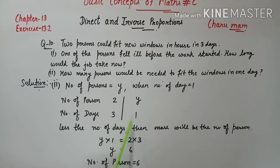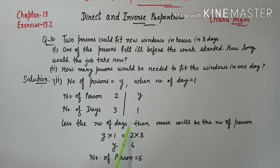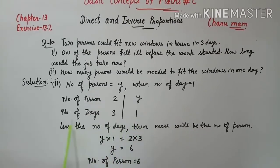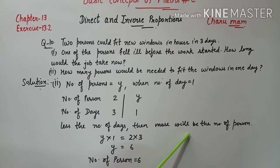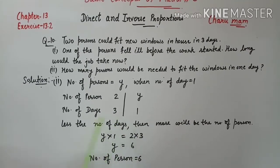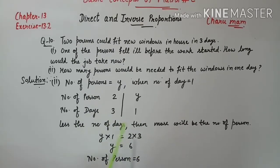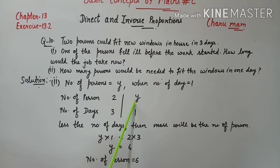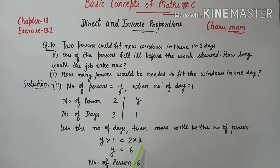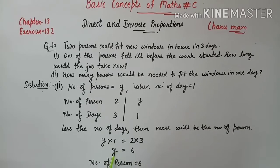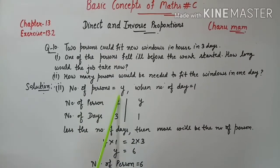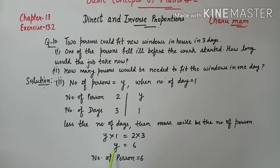Given: 2 persons, 3 days में काम complete कर रहे थे — 2 persons, number of days 3। अब number of days 1 है तो हमने y let किए number of persons। अगर number of days less हों तो more will be the number of persons — यह inverse proportion का case है। y × 1 = 2 × 3 = 6. Number of persons कितने आए: 6।